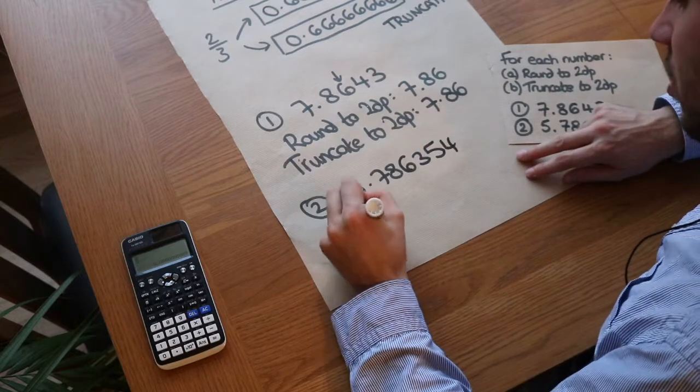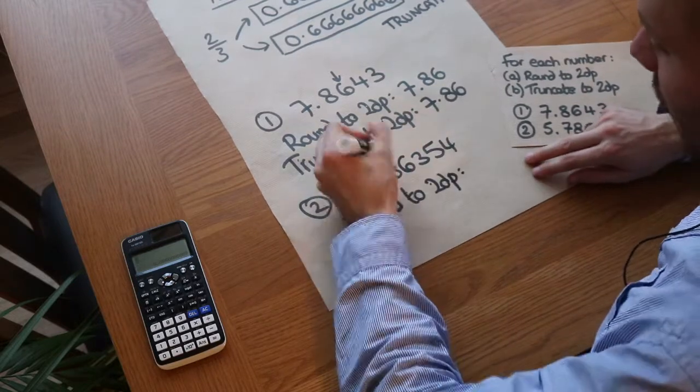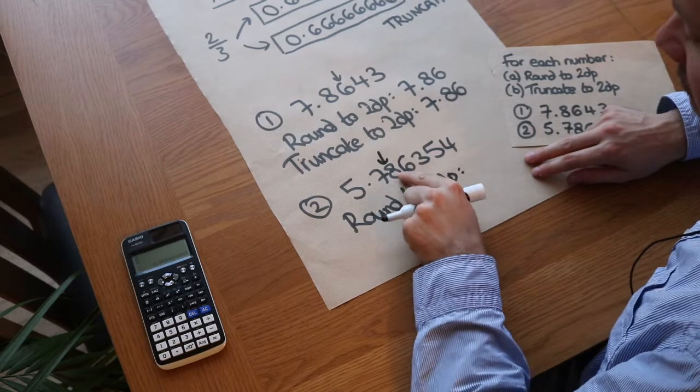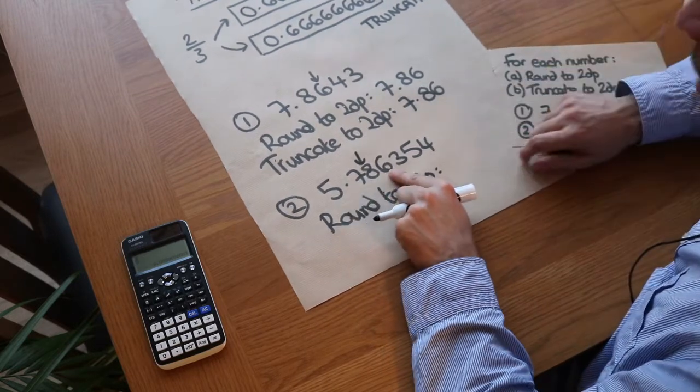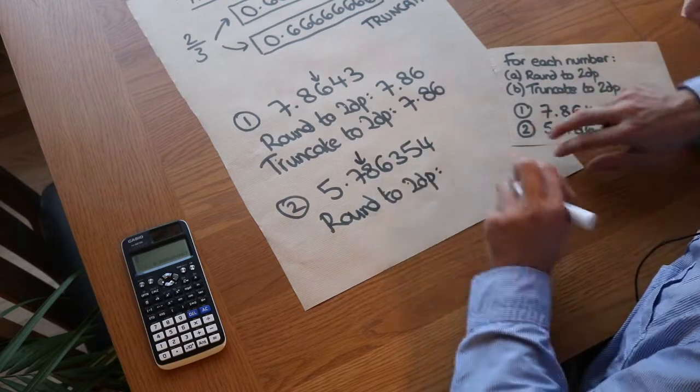If we round to two decimal places, we keep up to this digit here, the second digit after the decimal point, so it's 5.78. We check the digit after: is it greater than or equal to five? Yes it is, so that eight goes up to nine.